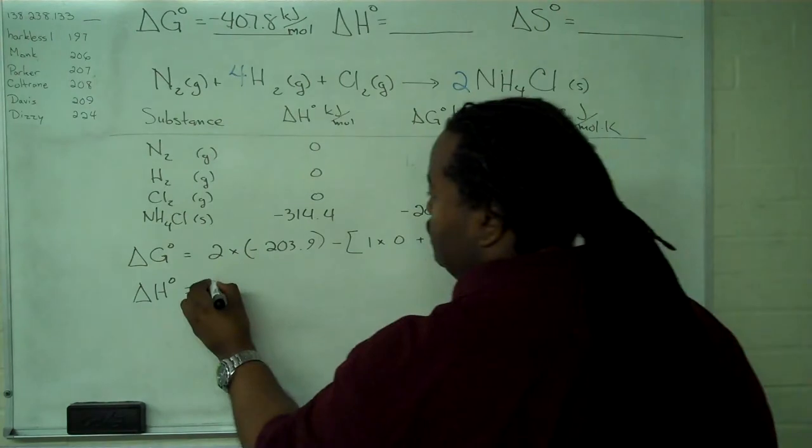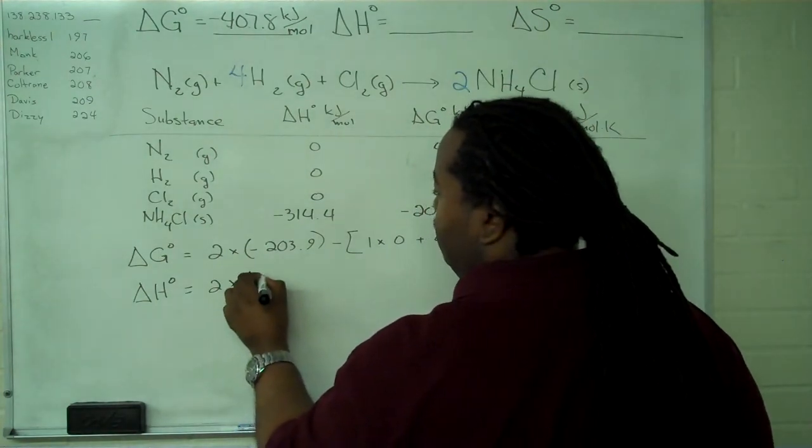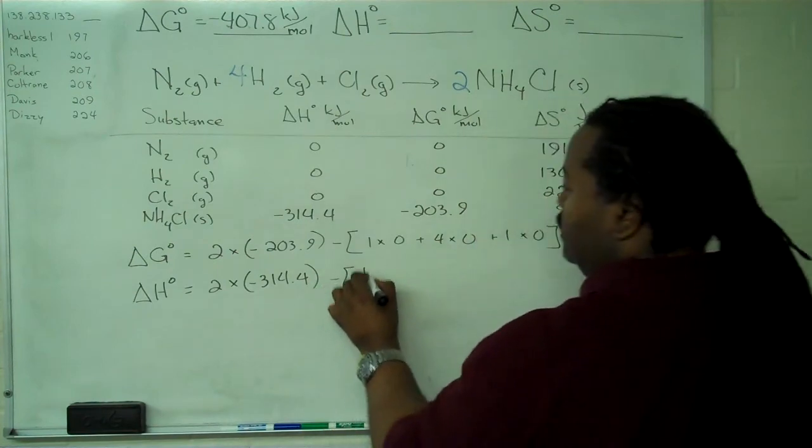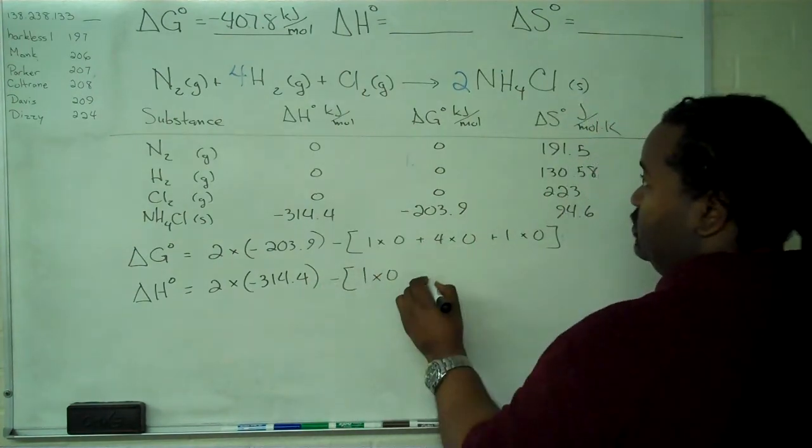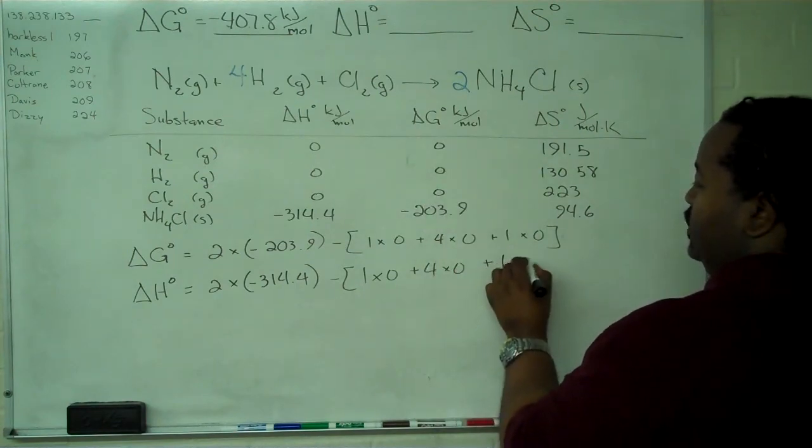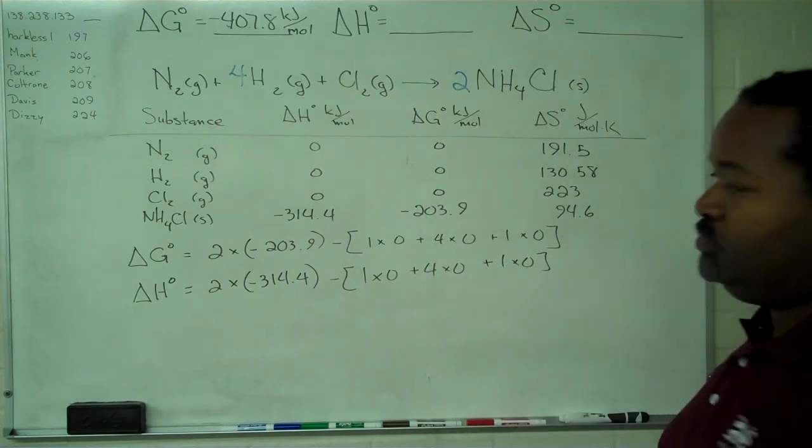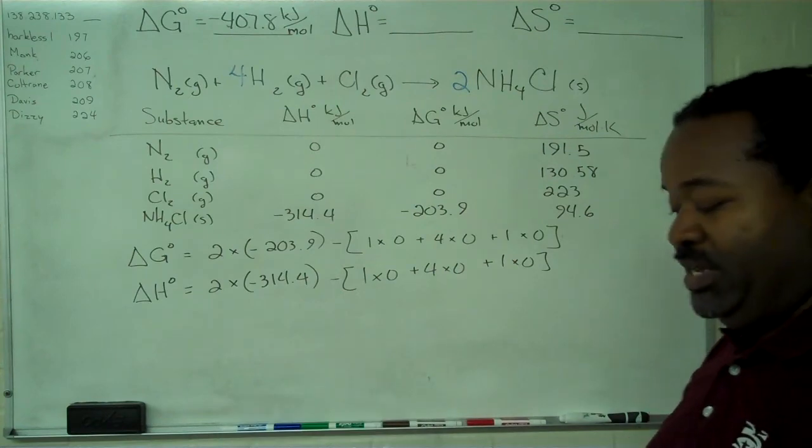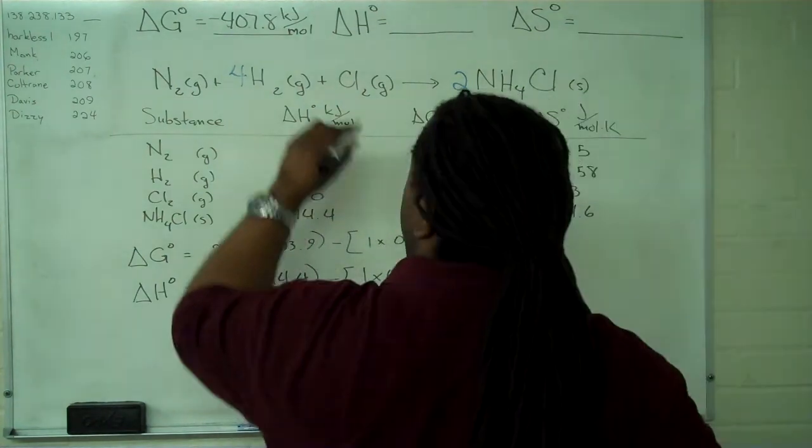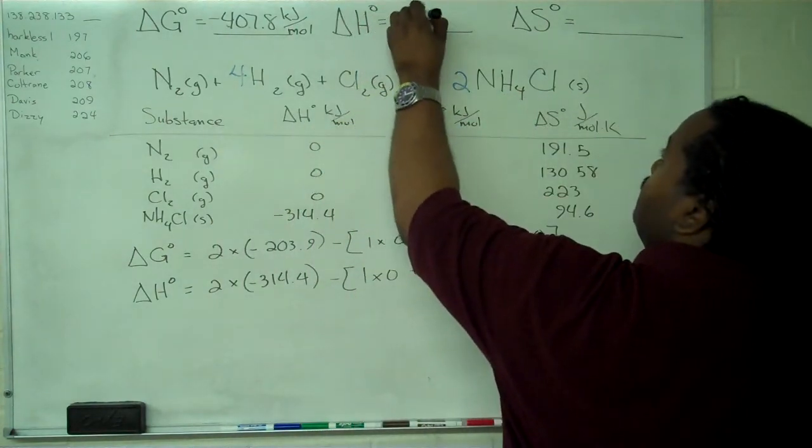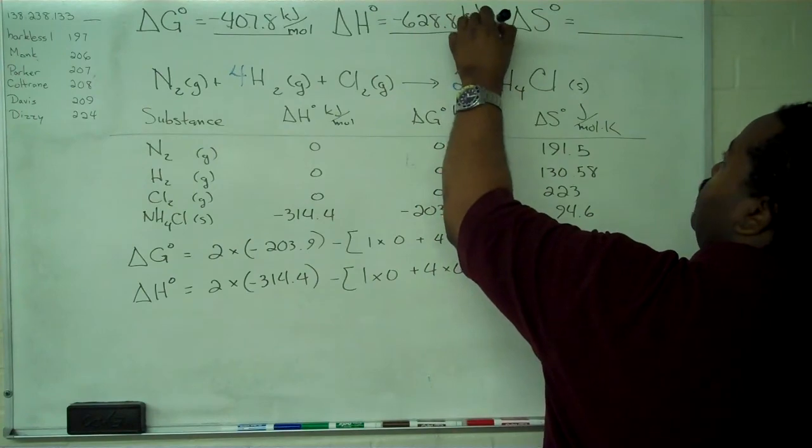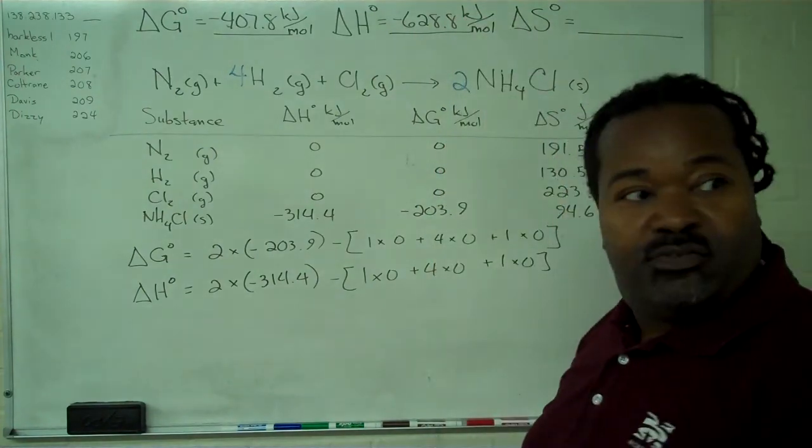We will take two times minus 314.4 minus one times zero for nitrogen, four times zero for hydrogen, and one times zero for chlorine. Again, we multiply and simplify through for everything, and we get minus 628.8 kilojoules per mole.